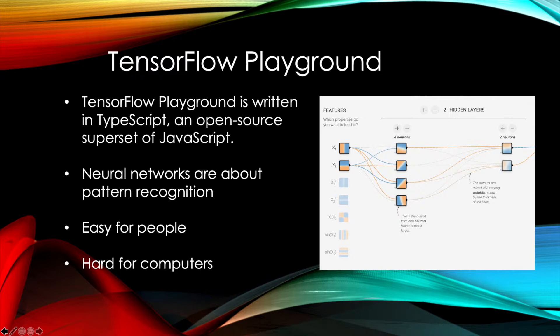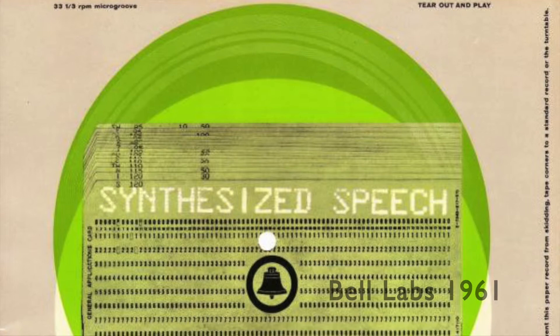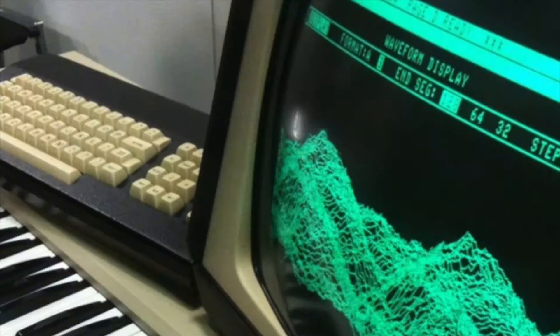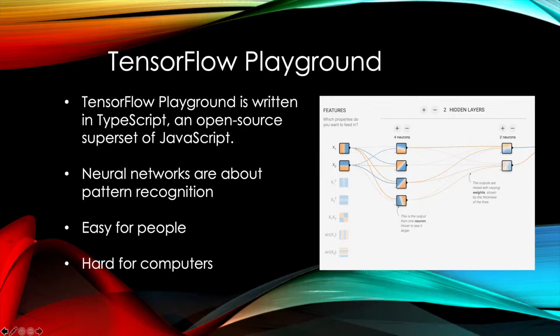Now one thing to know is that neural networks are about pattern recognition, and pattern recognition traditionally has been easy for people and hard for computers. Speech synthesis was accomplished a long time before speech recognition, and that's generally been true. And also music synthesis was achieved way before music recognition. So it's easy for computers to generate patterns, but it's much harder for them to recognize them, and that's what neural networks do very well.